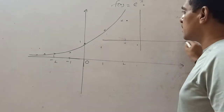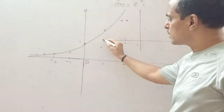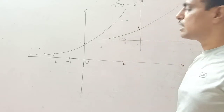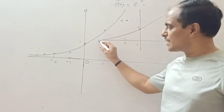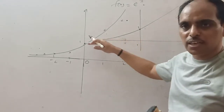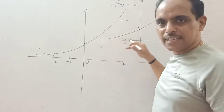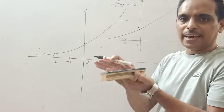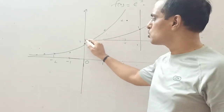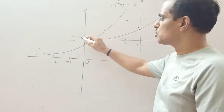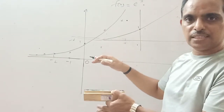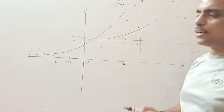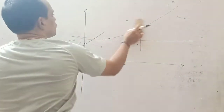Let me draw the rough sketch again. The graph of e^x: this value at x=0 is 1. As x goes to negative infinity, the graph gets very close to the x-axis but never touches it. The x-axis is an asymptote. This is the graph of e^x.